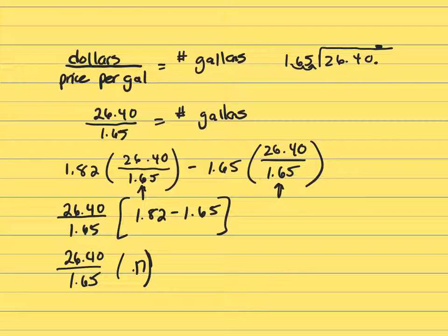$1.65 will go into $2.64 once, and that's going to be a 5 and a 6 and a 1, and that's going to be a 9 and a 9, and you bring down a 0.